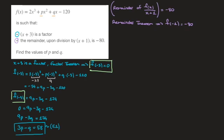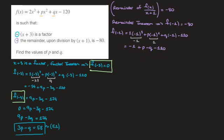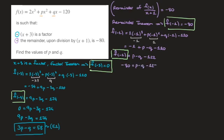So f of negative 1 equals 2 times negative 1 cubed plus p times negative 1 squared plus q times negative 1 minus 120. Using the fact that negative 1 cubed is negative 1 and negative 1 squared is 1, this becomes negative 2 plus p minus q minus 120. Gathering like terms, f of negative 1 equals p minus q minus 122. Using the fact that f of negative 1 equals negative 80, this becomes p minus q equals 42.